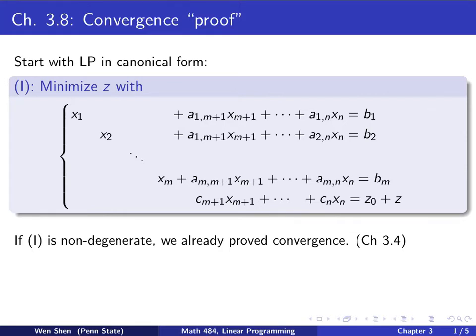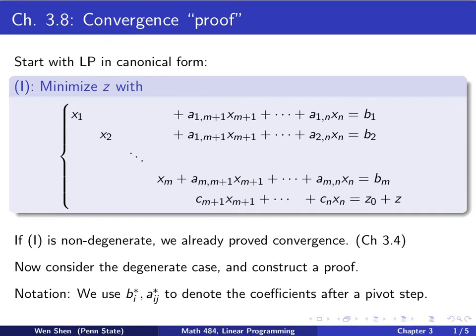So if this is unclear, you can review chapter 3.4. Once that part is cleared up, now we only need to consider the degenerate case, that is, some of the b's here are zero, and we need to construct a proof for that case.